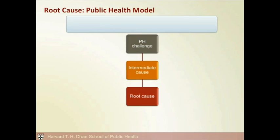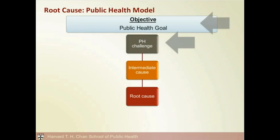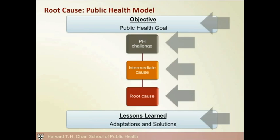Let's apply root cause analysis to public health. We use the same process, but customize the steps to a public health problem or issue. We start with identifying a public health challenge — the problem encountered during an emergency response. Our approach begins with the problem and then backs into the causes by asking why. We then consider the public health objective or goal related to this problem. Looking at the bigger picture helps us decide what was the mission of a response or process. We move on to identifying an intermediate cause — why did this public health challenge happen? Finally, we dig deeper to find the root cause, which ultimately impacted our ability to achieve our public health goal.